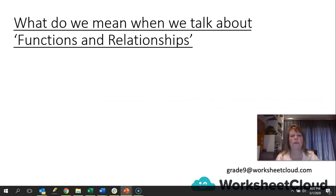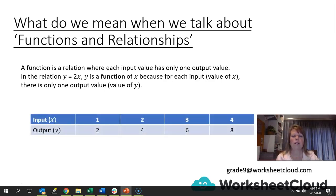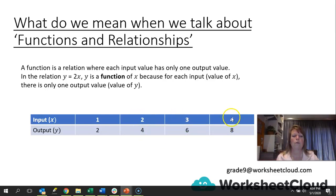So what do we mean when we talk about functions and relationships? A function is a relation where each input value has only one output value. In the relation y = 2x, y is a function of x, because for each x value (the input), there's only one y value (the output value). If we look at the table here, for each input value of x there is an output value of y. The relationship is x times 2 — in each case you are multiplying by 2. So 2 times 2 is 4, 3 times 2 is 6, 4 times 2 is 8.